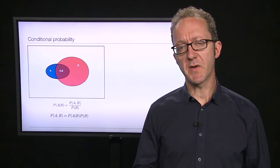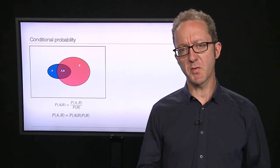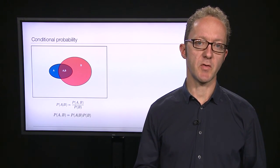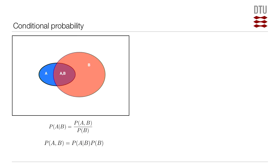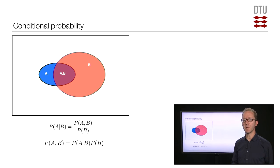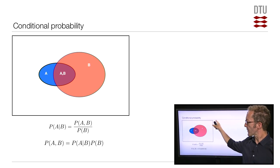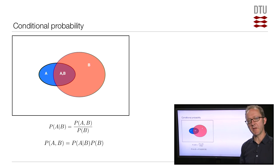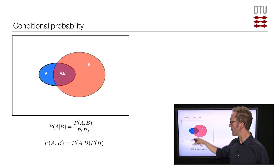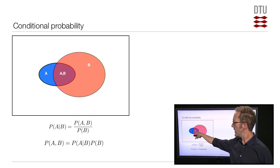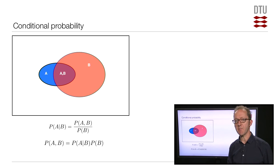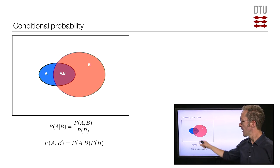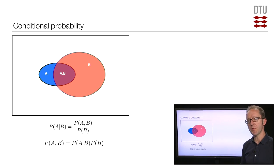Bayesian inference is very much about probabilities. I'm going to remind you about two basic aspects of probability theory. The first is conditional probabilities, which play an important role in Bayesian inference. Imagine we're looking at a Venn diagram: the box represents the space of all possible events, the blue circle represents event A with some probability indicated by its relative area, and there's event B with a slightly larger probability. The intersection is where both A and B are true.